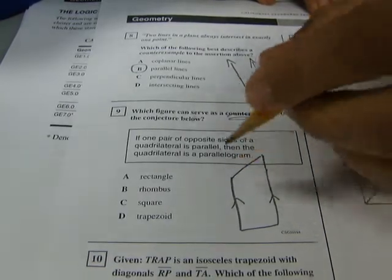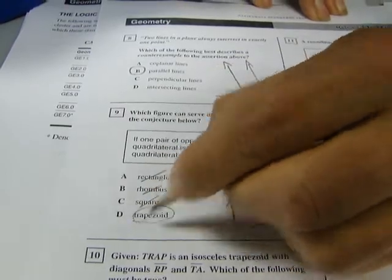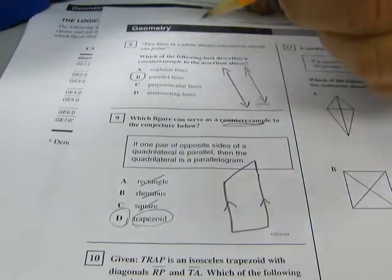So what we have here is a rectangle? Definitely not. Is a rhombus? Definitely not. Is a square? Definitely not. Is it a trapezoid? Yes, it's a trapezoid. So that's your answer. It's a trapezoid because one pair of sides is parallel.